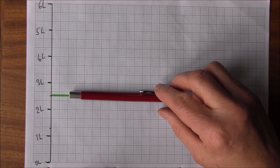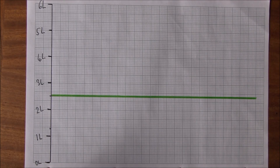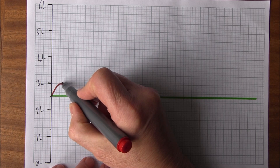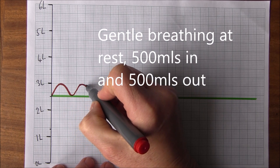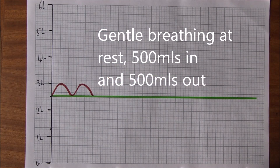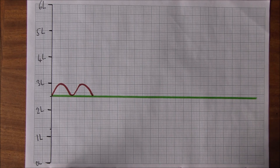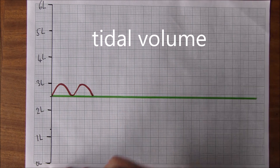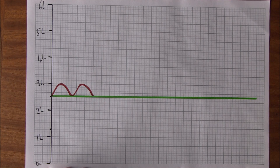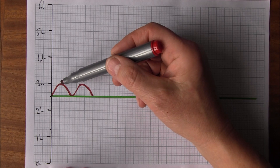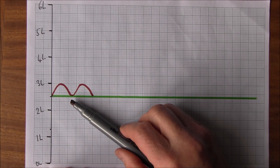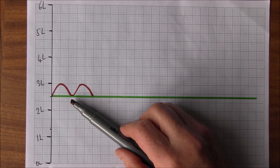As we know, breathing in is an active activity — it involves muscular activity. We breathe in and we breathe out, and we see the exchange here is about 500 mils of air. This is what we call tidal volume. At rest we're breathing in and out around about 500 mils per inspiration and expiration — that's the tidal volume at the top and bottom of that curve.